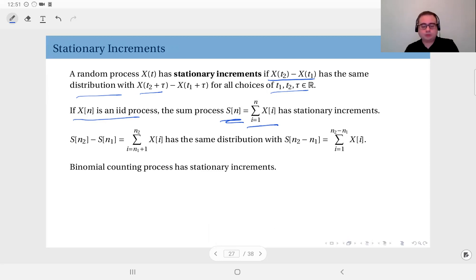But one pointer here: S(n2) minus S(n1). This is the increment in the sum process from n1 to n2. And obviously this is equal to the sum from n1 plus 1 to n2 of xi's. It will have the same distribution with S(n2 minus n1).